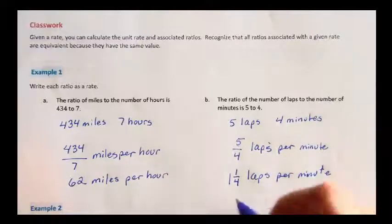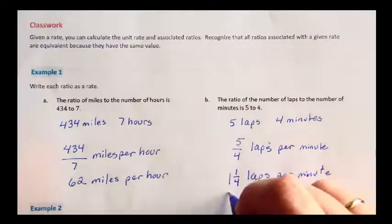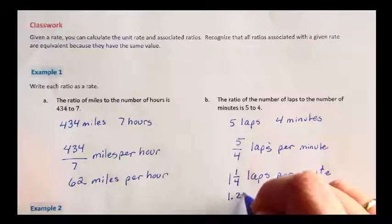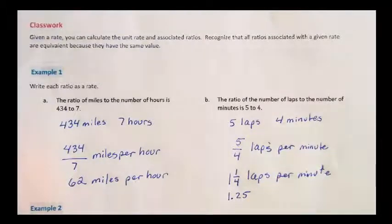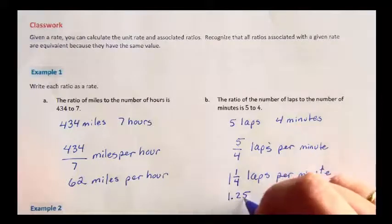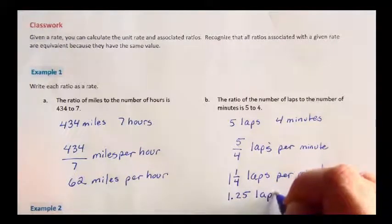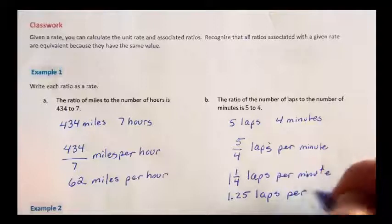Or we can write it as a decimal. 1 fourth is equivalent to 25 hundredths: 1 and 25 hundredths laps per minute.